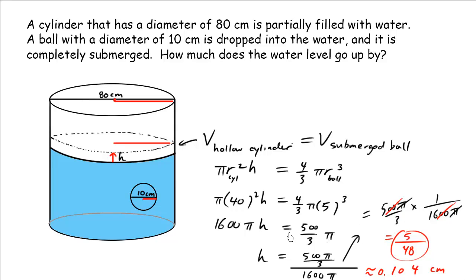What makes this question tricky is the algebra involved — dividing and simplifying fractions — and being comfortable with your calculator for these many different numbers. Conceptually, you need to understand that whatever you put into water makes the water rise, and this imaginary hollow cylinder will have an equivalent volume to the submerged object. It doesn't have to be a sphere — it can be any object. Whatever you put in, that total volume equals the raised volume.